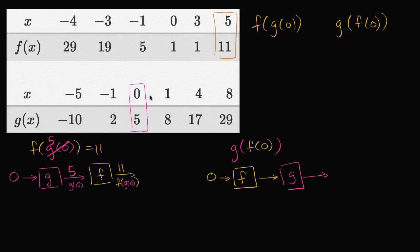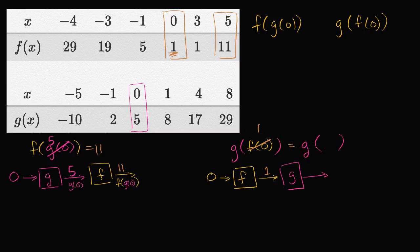What is f of zero? When our input is zero, the table tells us that f of zero is equal to one. So now we use one as an input into g — we're now evaluating g of one. This is the same thing as g of one, because f of zero is equal to one.